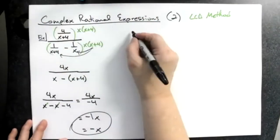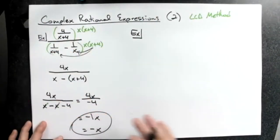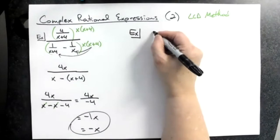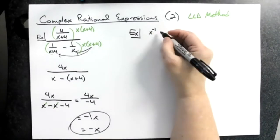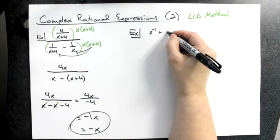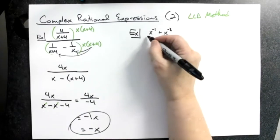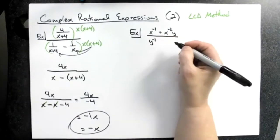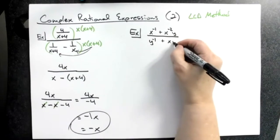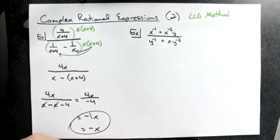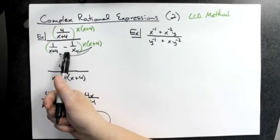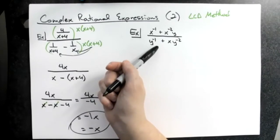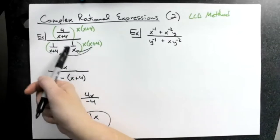Now as another one — exact same type of problem, but written in a different form. If they give me x to the negative 1 plus x to the negative 2 times y, all over y to the negative 1 plus x times y to the negative 2 — this is the exact same thing, just in a different format. You're going to have to rewrite using your laws of exponents so that you create a complex rational expression that looks like the previous one.